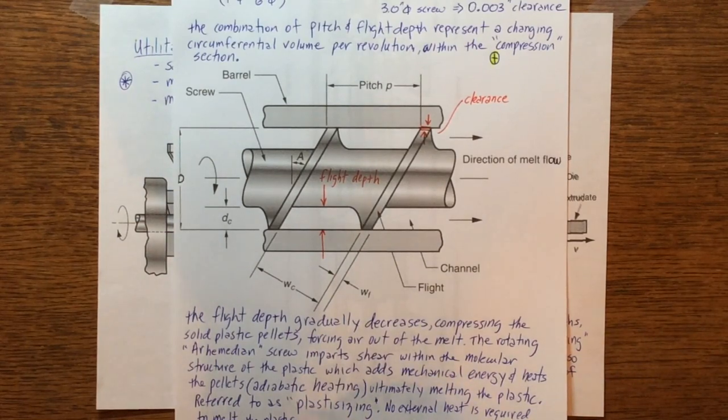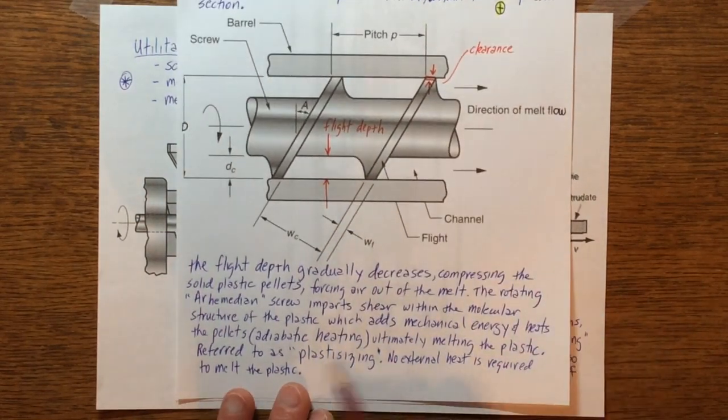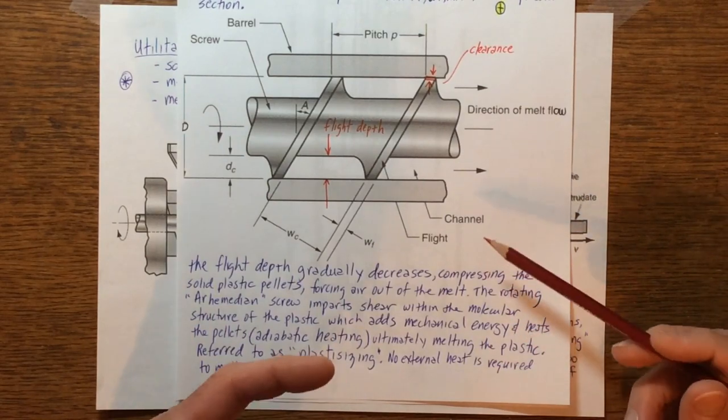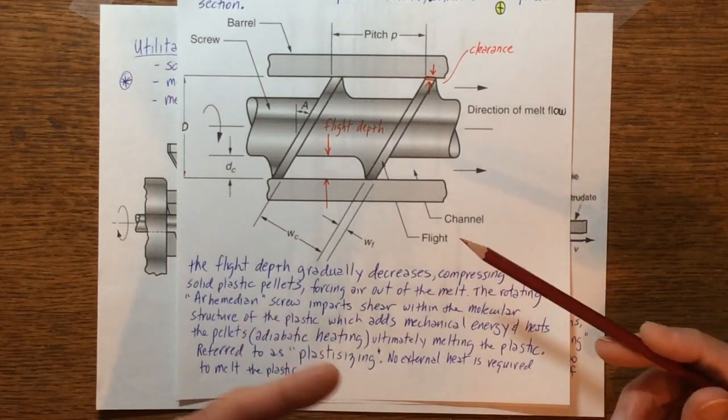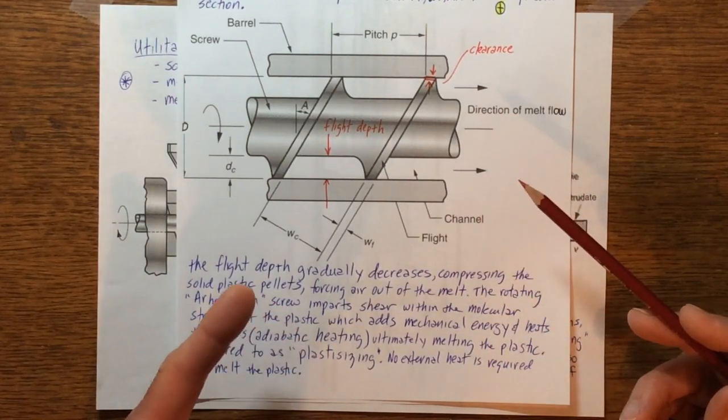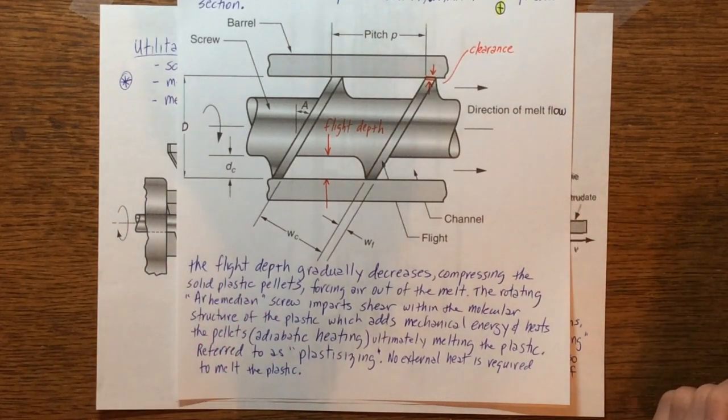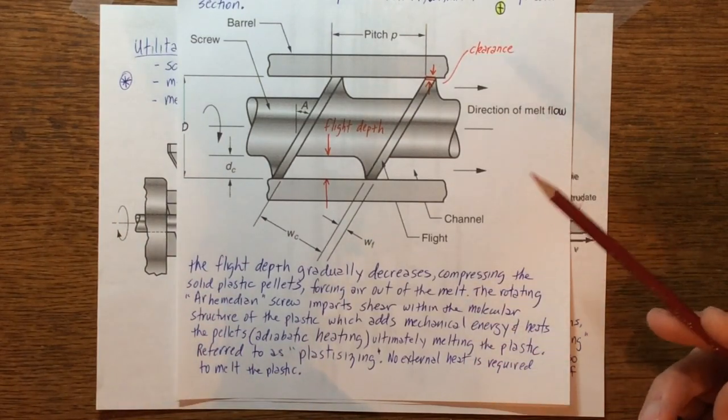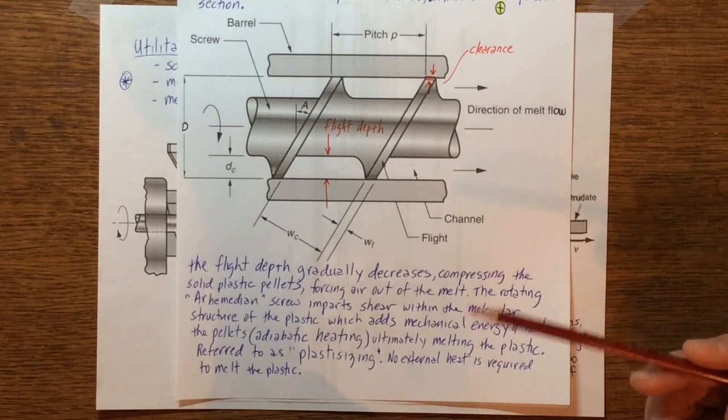So essentially it's heating and melting the pellets by this shearing action, this molecular shearing action, what we call adiabatic heating, and that ultimately melts the plastic. That's how the plastic gets from a solid to a liquid state, referred to as plasticizing.